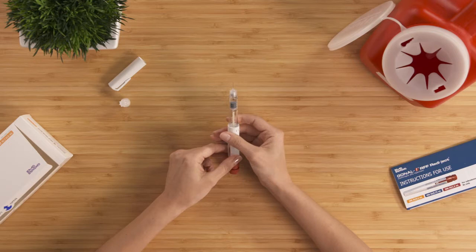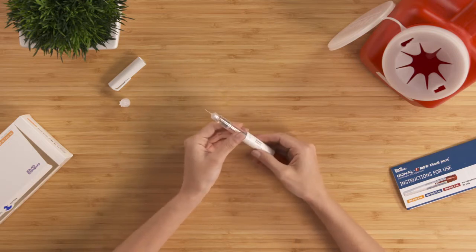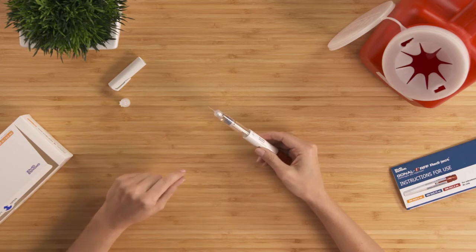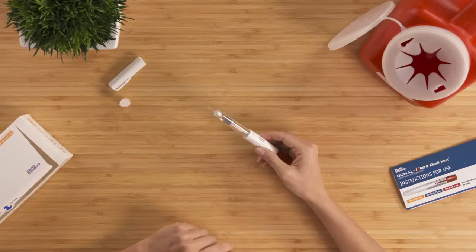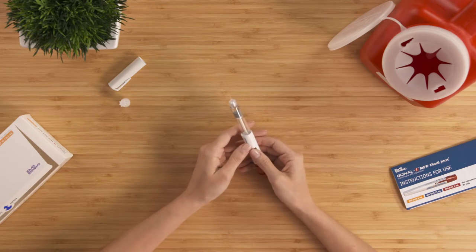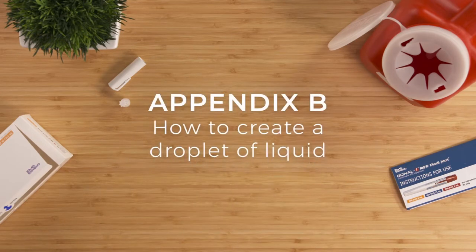Before I move on to the next step, I need to ask if you're using a new pen or reusing a pen. If your pen is new, as mine is here, then check for a droplet of liquid at the tip of the needle. If you see a droplet, then move on to step four. If you don't see a droplet or you're not sure, pause the video and follow the instructions for use in Appendix B, How to Create a Droplet of Liquid.